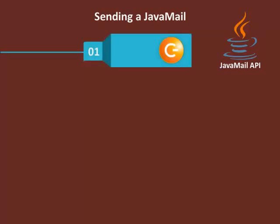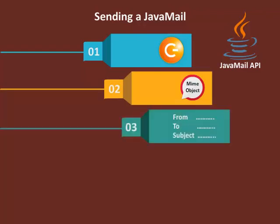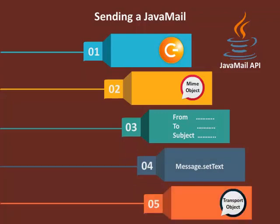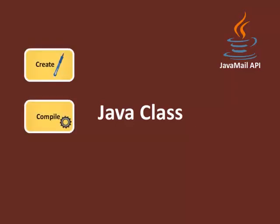The steps followed in sending an email are: 1. Getting a session. 2. Creating a default MimeMessage object. 3. Set from, to, and subject in the message. 4. Set the actual message text using message.setText(). 5. Send the message using the Transport object. The implementation requires creating a Java class, compiling and running the class, and verifying the output.